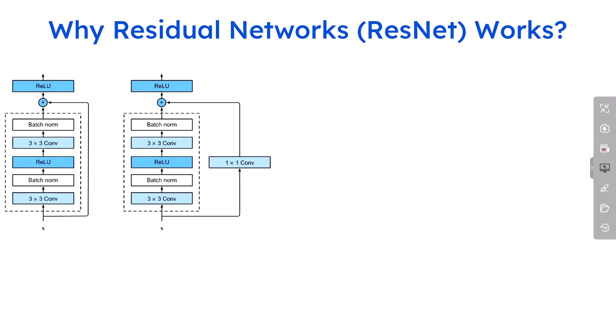Let's go ahead and see what is a residual network, or ResNet, and does it really work in practice. Residual network is also known as ResNet. This is a deep learning architecture that actually revolutionized the field of computer vision. It improves the accuracy and performance of artificial neural networks. The first residual network was introduced in 2016.